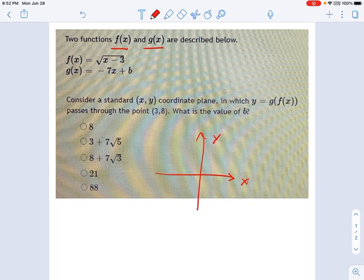And that line, we're talking about this line right here, that equation, passes through the point 3 comma 8, which is going to be somewhere over here. It's going to be x equals 3, y equals 8. It passes through that point, and it wants to know what's the value of b.